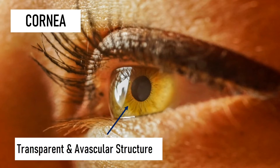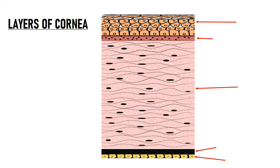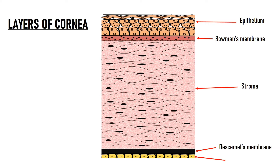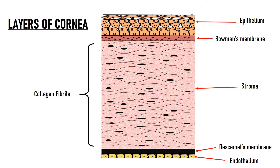The cornea is a transparent and avascular structure. It has 5 layers: the anterior epithelium, Bowman's membrane, corneal stroma, Descemet's membrane, and the corneal endothelium. The corneal stroma is made up of collagen fibrils. The reason why the cornea is transparent is because of the regular spacing and arrangement of these collagen fibrils. If due to any reason this arrangement is disturbed, it leads to loss of corneal transparency.